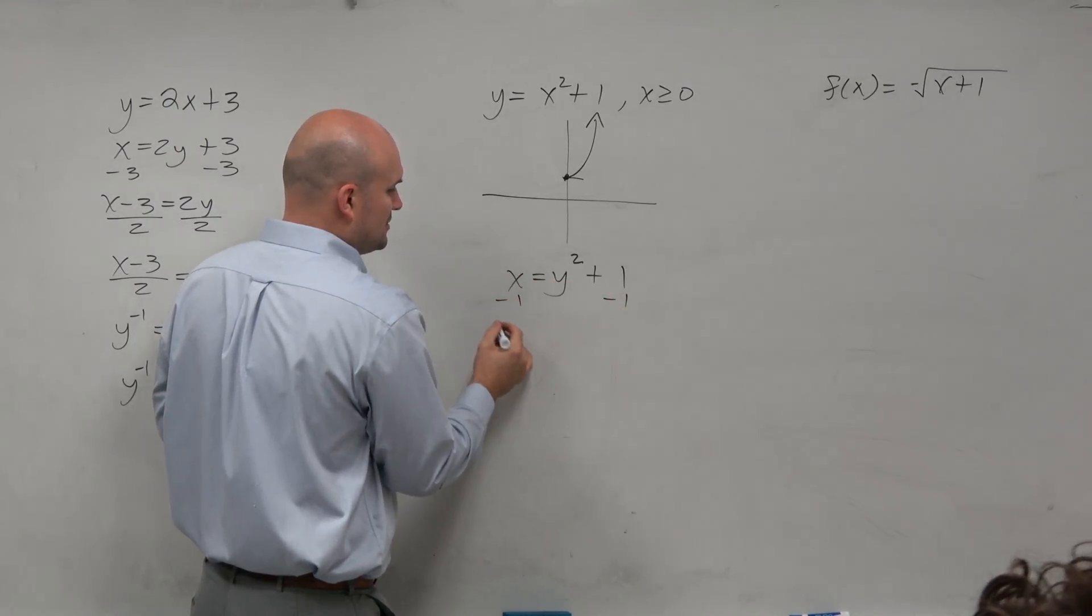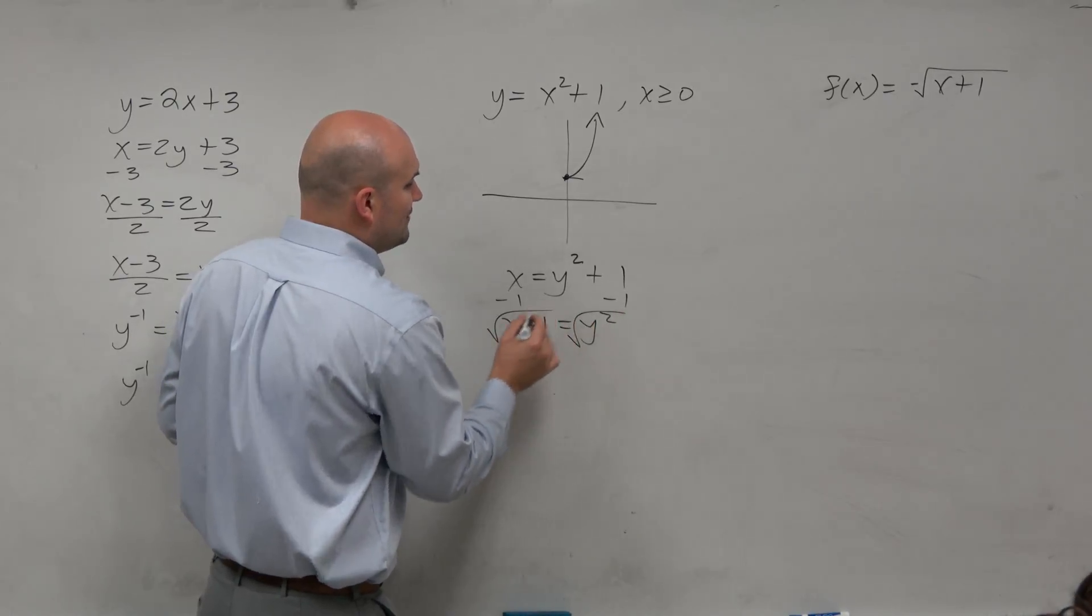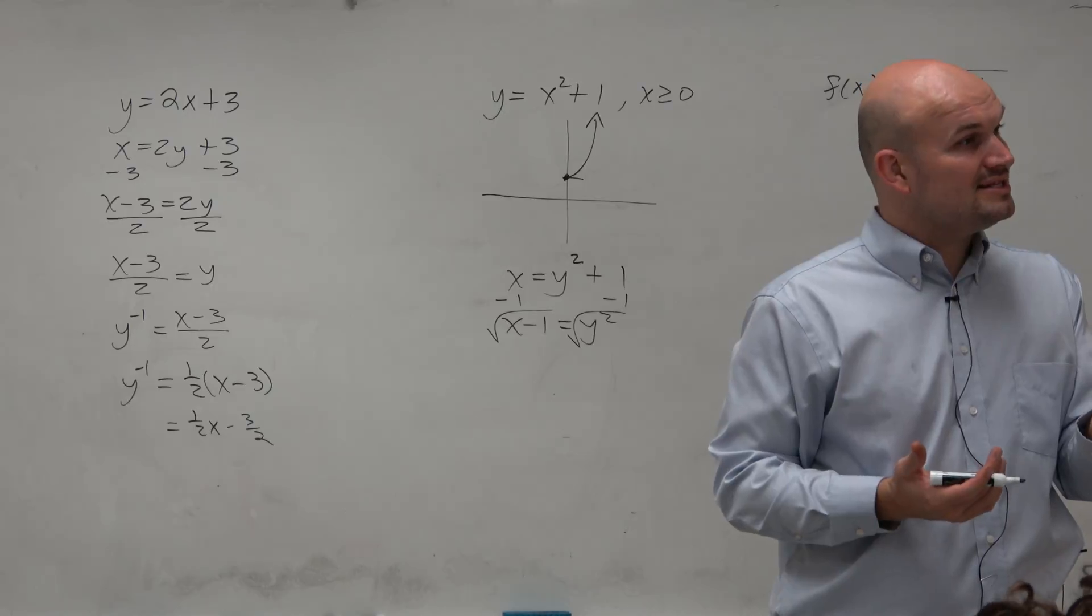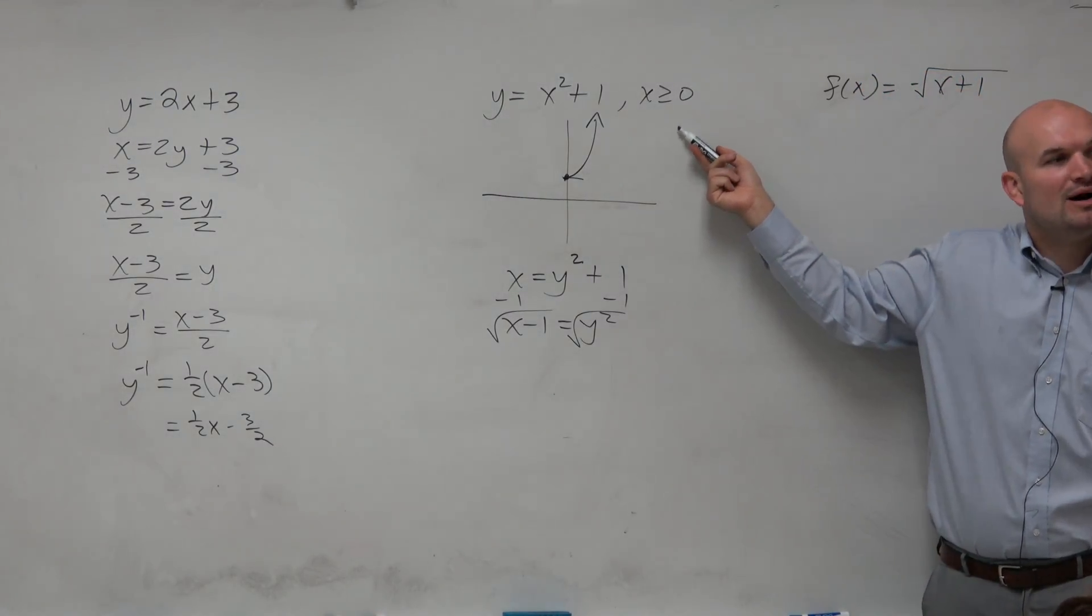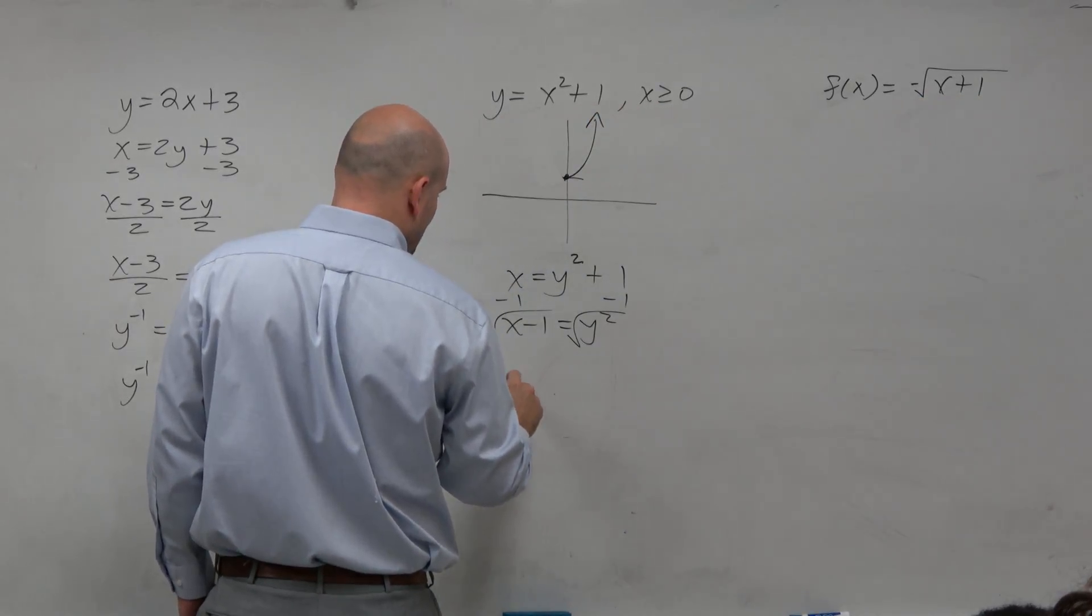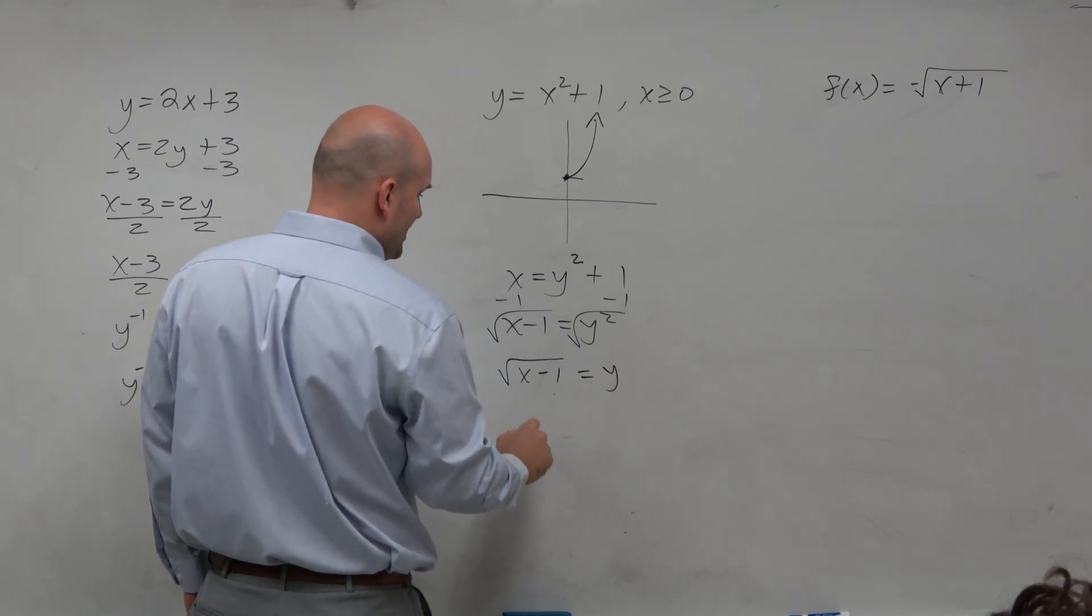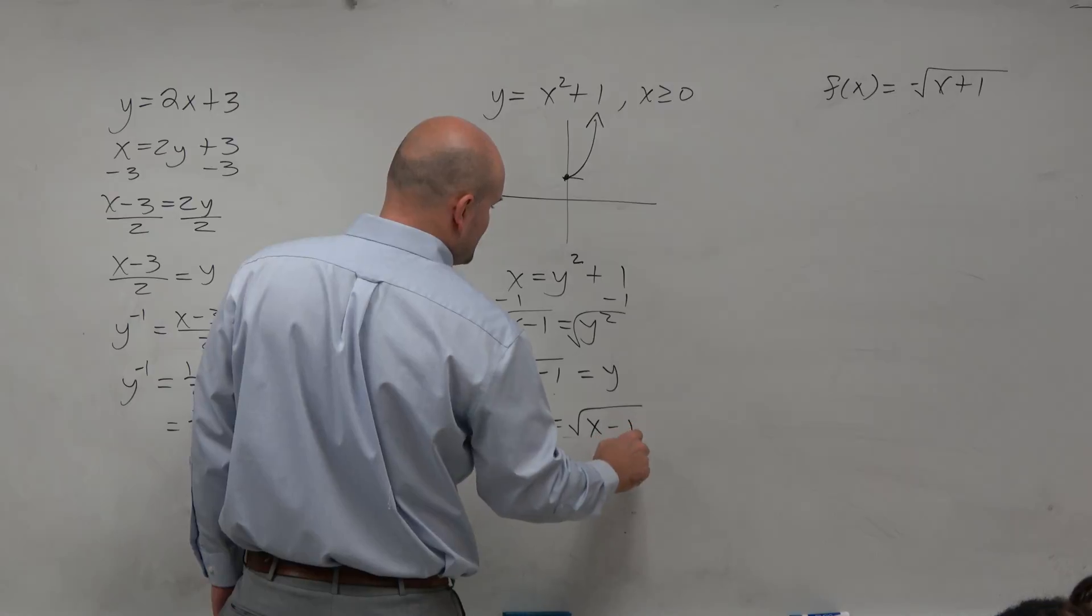Now we've got to solve for y. Subtract 1, subtract 1. x minus 1 equals y squared. Undo squaring by taking the square root. Whenever you introduce the square root, you have to include plus or minus. But in this case, do we have to include minus? No, because we only want the positive version. So therefore, we have positive x minus 1 is equal to y. Or y inverse is equal to the square root of x minus 1.